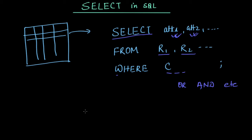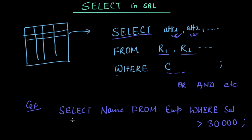Now let's write a simple SQL SELECT query. In this query we are selecting name FROM employee WHERE the condition is that salary should be greater than 30,000. So this query will list down all the employee names whose salary is greater than 30,000 from the employee table.